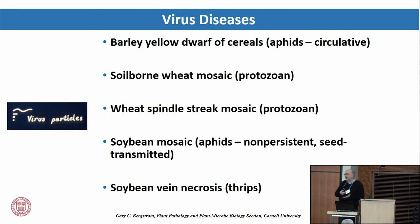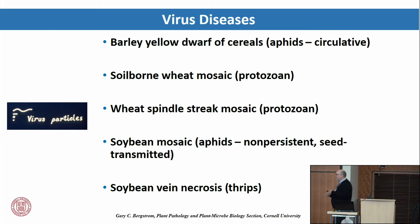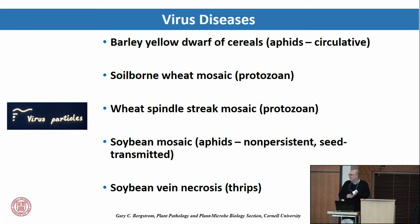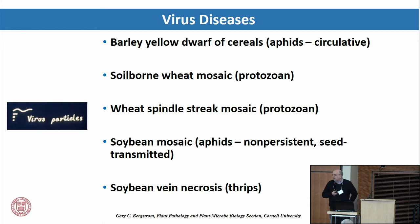We do have some important virus diseases in these crops. Viruses can't reproduce on their own — they can only reproduce in a living plant cell, and they can't get into that cell on their own. They have to be transmitted by a vector that wounds and introduces the virus into the plant, such as aphids or sometimes nematodes. They can also be seed-borne or get in through mechanical injury. There's already been some talk today about things like barley yellow dwarf virus.